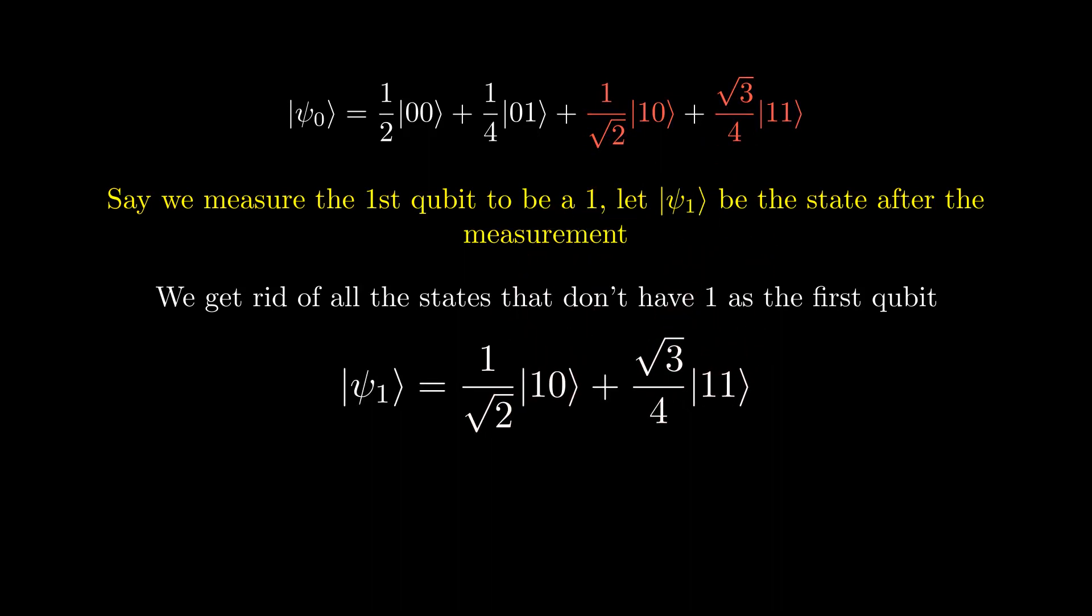Remember, the probabilities must add up to 1. But we have just removed some states, so the probabilities will be less than 1. We fix this by multiplying the state by what we call a normalization constant. Let's call it a.